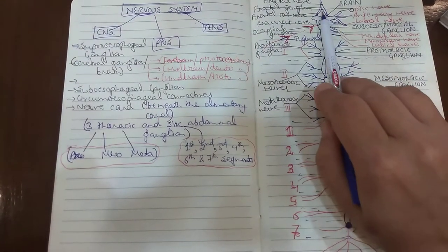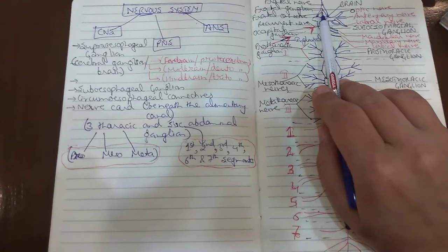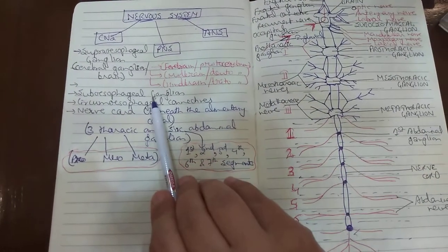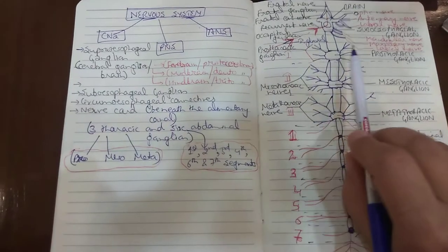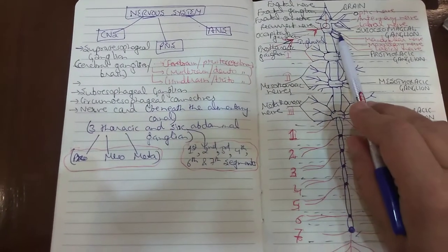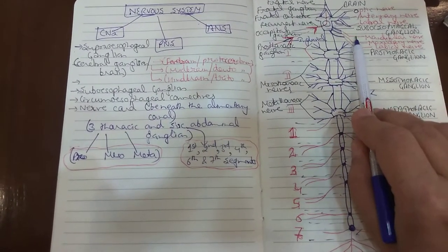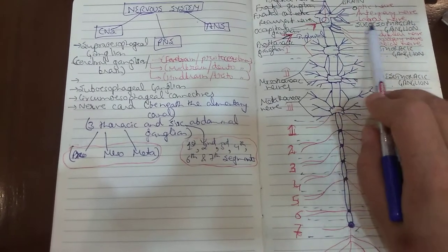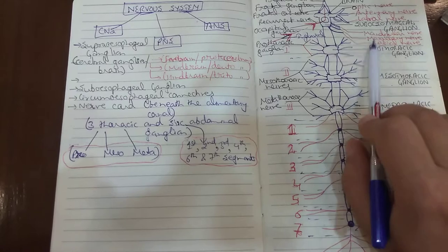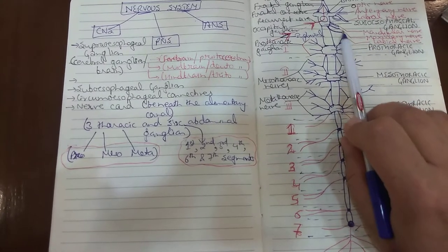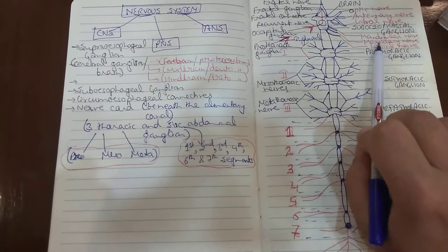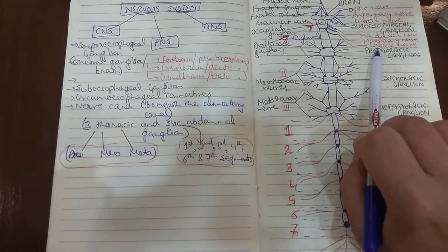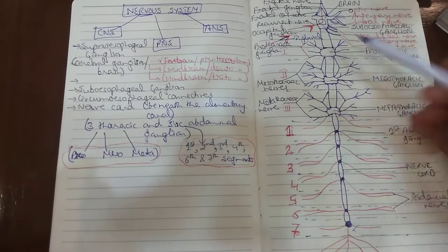The frontal connective joins the frontal ganglion of the autonomic nervous system. Then the nerves from the subesophageal ganglion: it gives the mandibular nerves, which innervate the mandibles — the mouthparts including labrum, mandible, maxilla and labium. It also gives the maxillary nerves, which innervate the maxilla, and the labial nerves, which distribute to the labium.